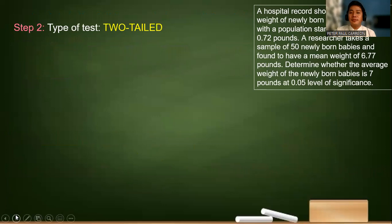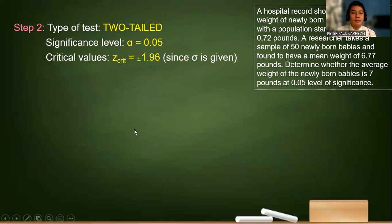Step two, type of test is two-tailed. The significance level is 0.05. And our critical values is positive negative 1.96.